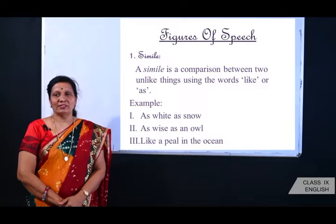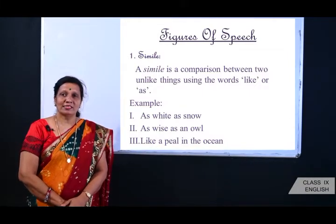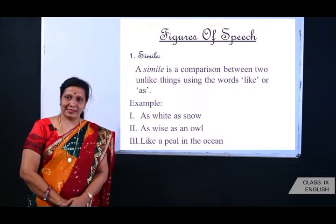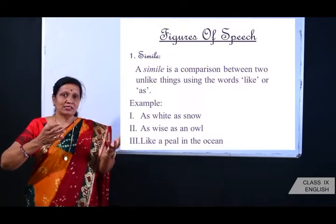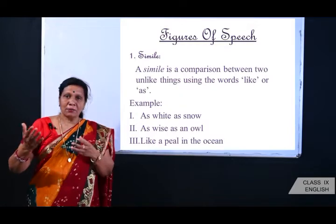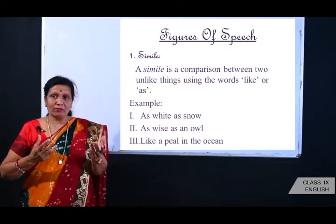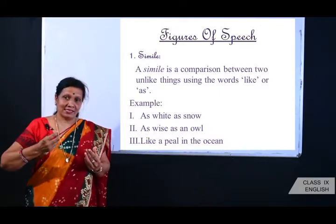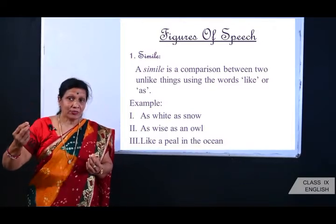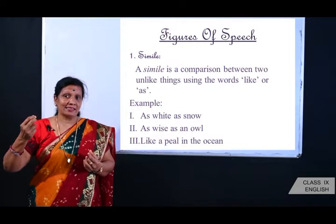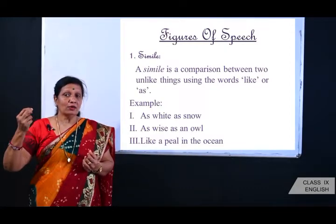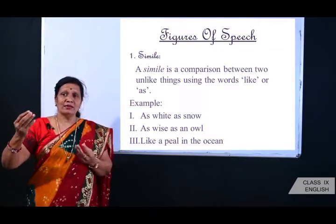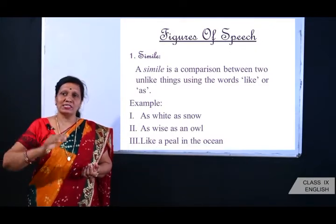The first figure of speech is simile. A simile is a comparison between two unlike things using the words 'like' or 'as.' When you see a comparison in a poem using 'like' or 'as,' that is a simile. For example: as white as snow, as wise as an owl, like a pearl in the ocean. Whenever you see any comparison using 'like' or 'as,' that figure of speech is known as simile.